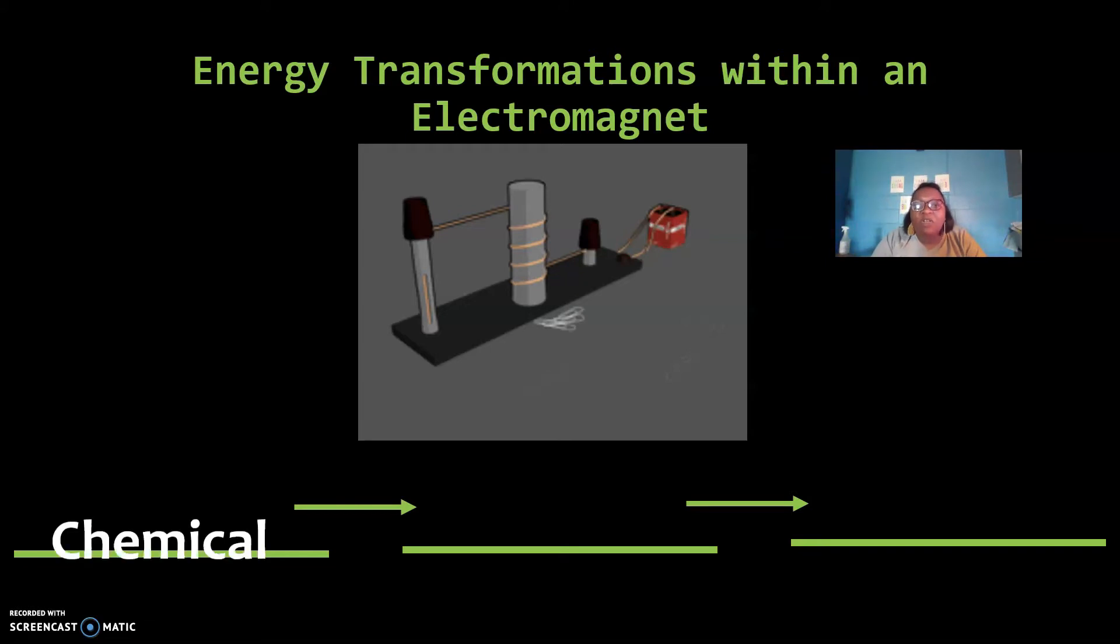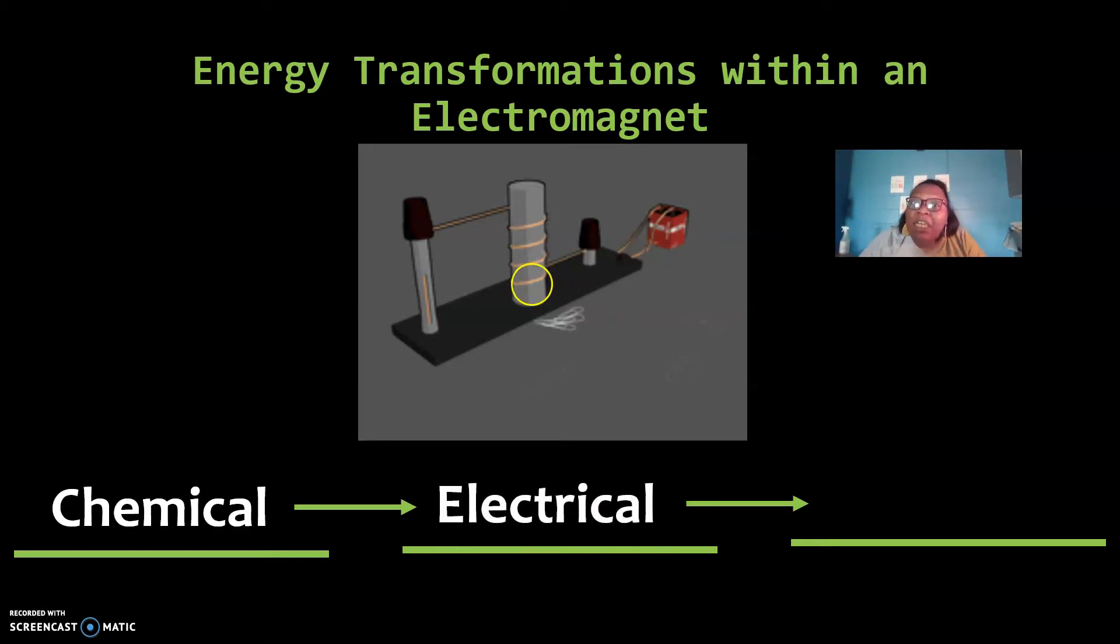And so the first, our first energy source here in this situation, the power source is a battery. And so we have chemical energy transforming into electrical energy. That's that energy that's flowing within that copper wire. And then that energy is transforming into magnetic energy, a new type of energy we've not discussed in the last five weeks.